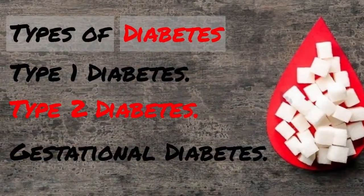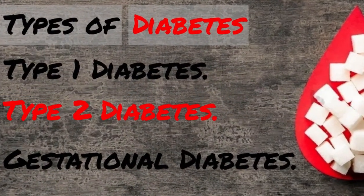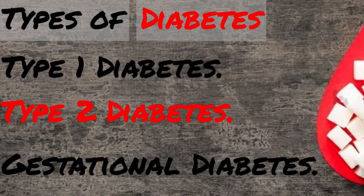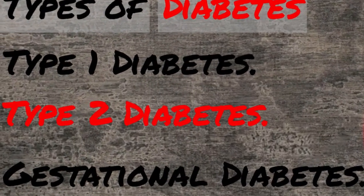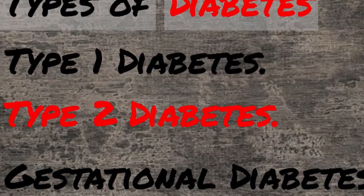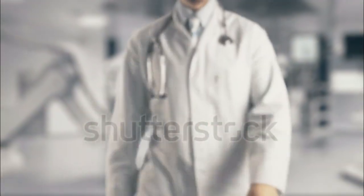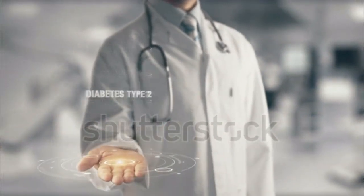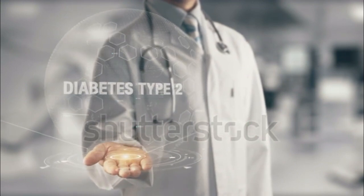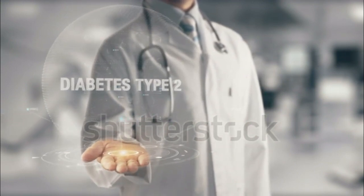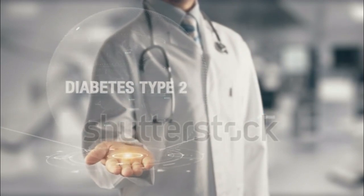Type 2 diabetes. If you have type 2 diabetes, your body does not make or use insulin well. You can develop type 2 diabetes at any age, even during childhood. However, this type of diabetes occurs most often in middle-aged and older people. Type 2 is the most common type of diabetes.